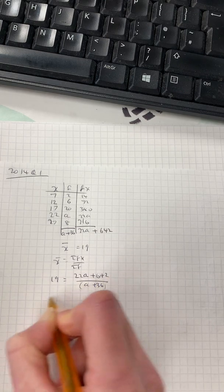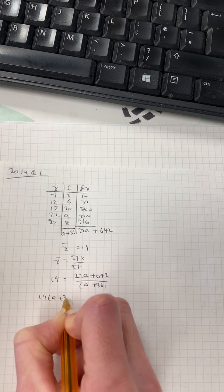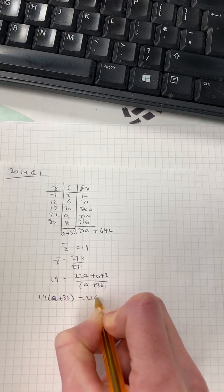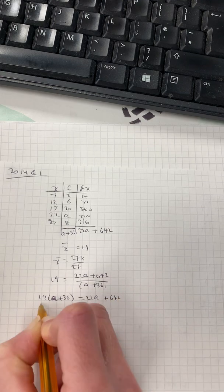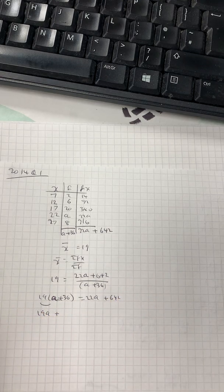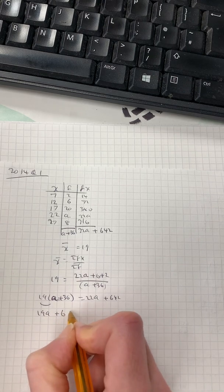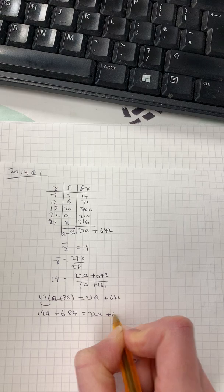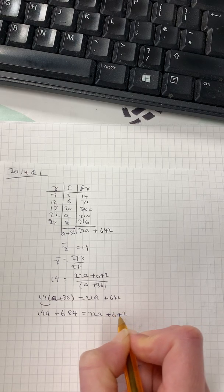Bring that up to the other side. So 19a add 36, which is an a, equals 22a plus 642. Timesing this out, 19a add 684 equals 22a plus 642.